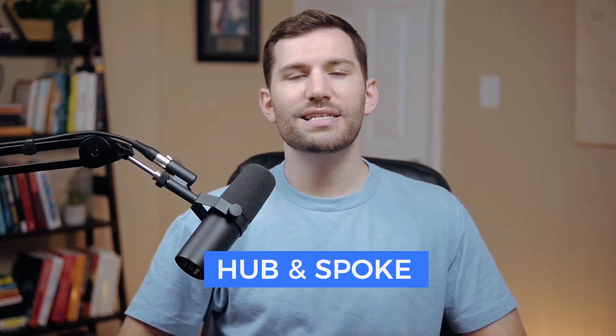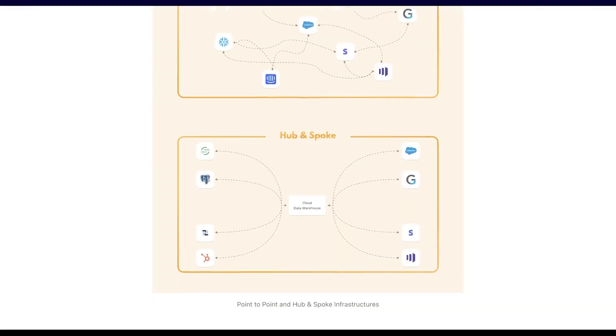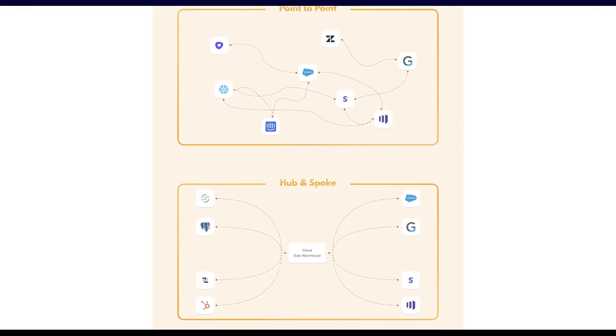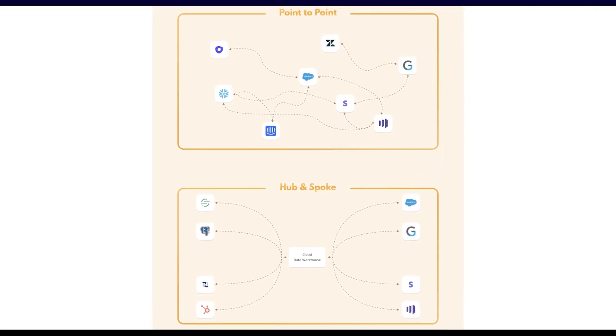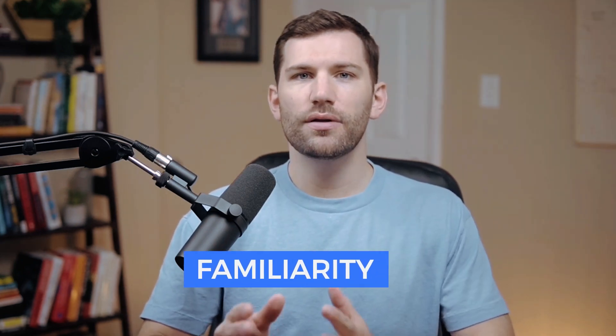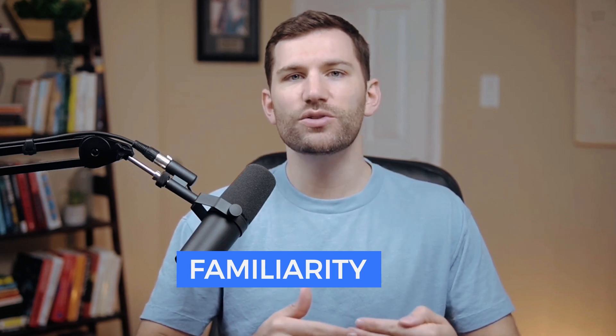Tools like Census follow what's known as a hub-and-spoke approach. This means that there's one single source — usually your data warehouse — that's used for all outbound connections. All business apps can pull directly from the same trusted underlying source, which avoids potential differences between many point-to-point integrations. By sending transformed data directly to the business applications, your users can stay in their native tool, where they're likely way more comfortable with the layout as opposed to a BI tool.